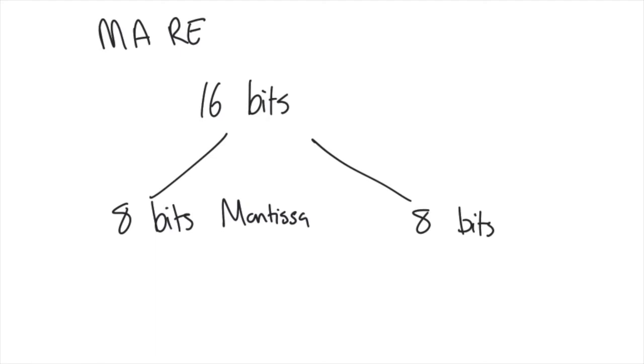Say I needed to represent a number on a computer and I had 16 bits to do so. I could allocate 8 bits to save the mantissa and 8 bits to save the exponent.